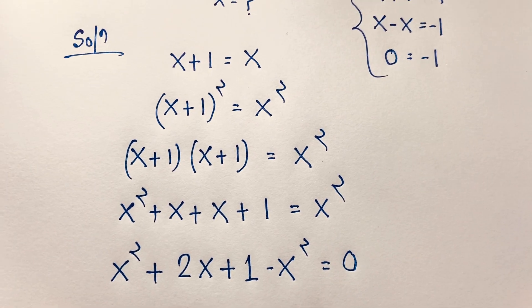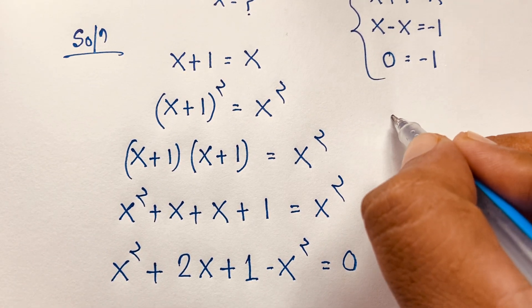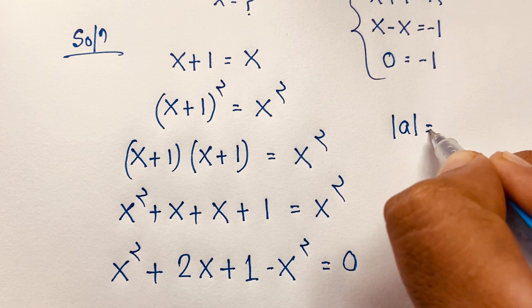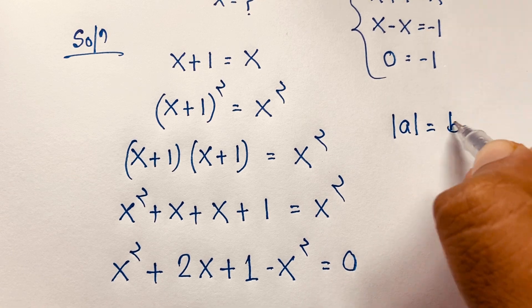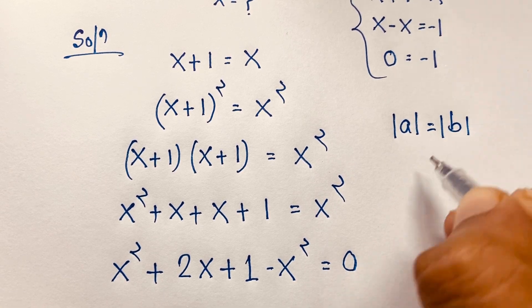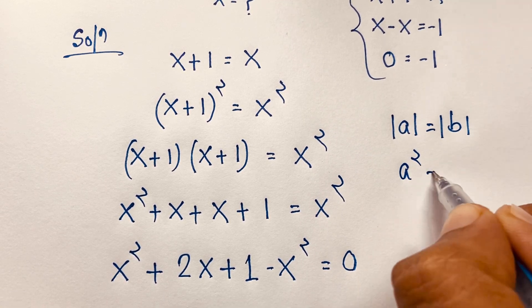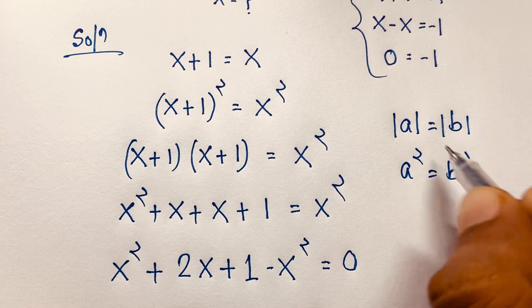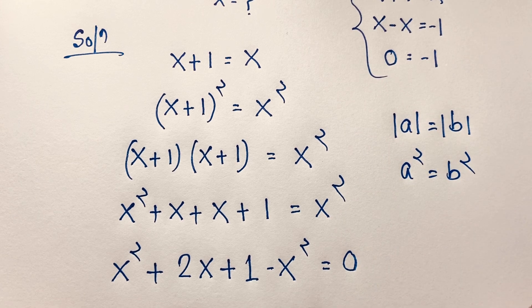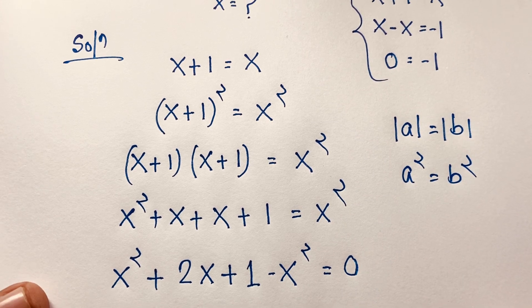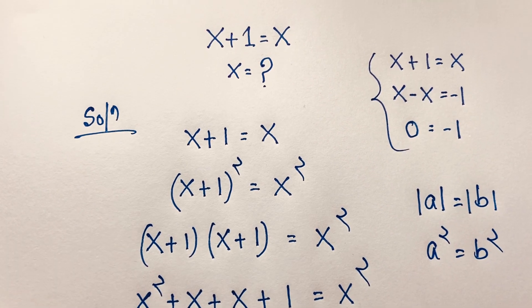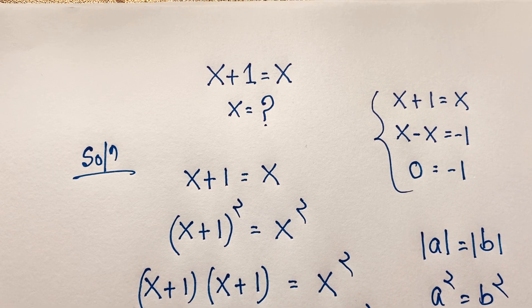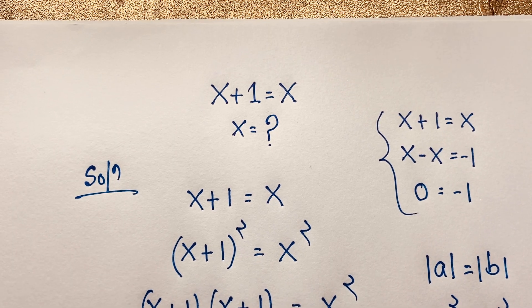When we use both sides whole squared, we can use squaring both sides only when a and b are absolute values — then a squared equals b squared. I used both sides whole squared. Thank you all! If you enjoyed this funny math problem, please subscribe to my channel for other interesting videos. Goodbye, take care!